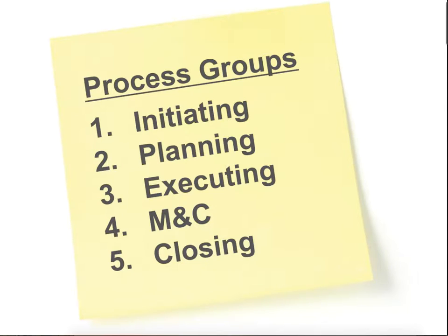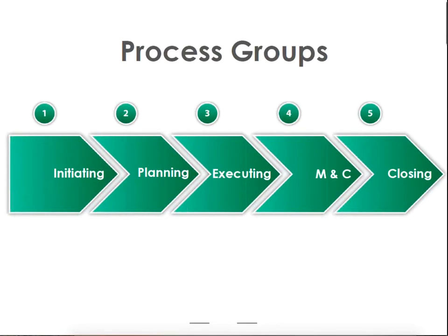Monitoring and control is just a way of keeping track of how things are going and making sure they're still on track. And fifth is closing — one of my very favorite process groups, mainly because it's a way to continuously improve. Closing is where you look back at the project and determine what you did well and what you could have done better, and use those learnings to improve future performance. The process groups flow: initiating, then planning, then executing, into monitoring and controlling, and finally closing.